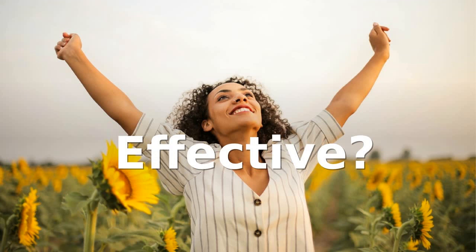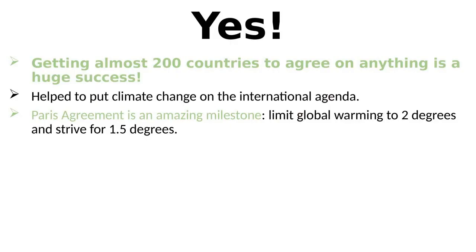How effective has the UNFCCC been so far? Well, first of all, it is important to acknowledge that getting almost 200 countries to agree on anything is a huge success. The UNFCCC has helped to put climate change on the international agenda, and its annual COP meetings helped to put the spotlight on the issue regularly. The Paris Agreement is an amazing milestone, and world leaders have agreed to limit global warming to 2 degrees and strive for 1.5 degrees. Carbon neutrality is aimed for globally by 2050. All this is great.